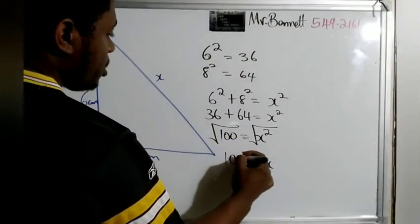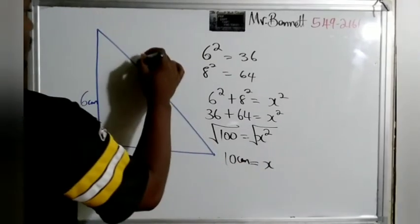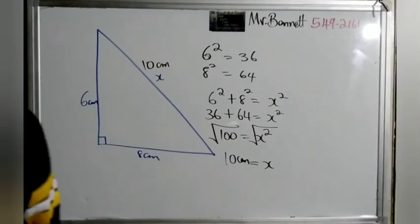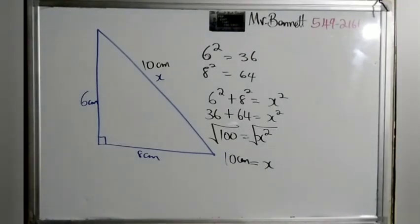Therefore, square root of 100—what number do you multiply by itself to give you 100? That will be 10. So the length of this would be 10 centimeters. Magic, and these are done by black people like us. Amazing.